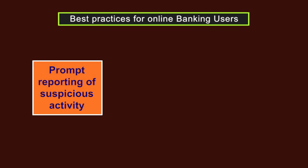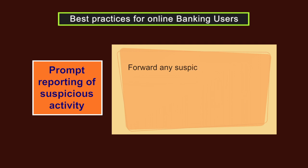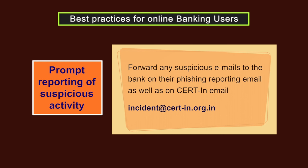Last but not the least is prompt reporting of suspicious activity. Contact your bank immediately if you think someone knows your security access code, or in case of theft of your code or money, or in case you have forgotten your credentials. Forward any suspicious emails to the bank on their phishing reporting email as well as on the CERT email ID shown in the screen. Your prompt action is crucial to prevent any further damage.